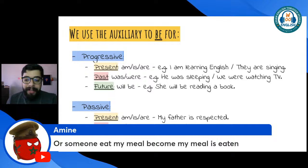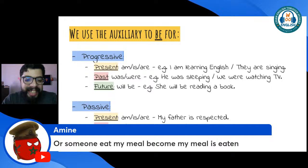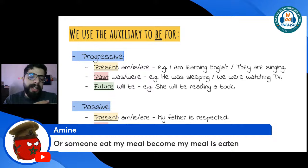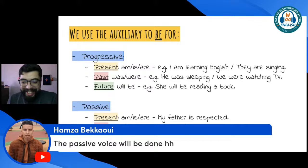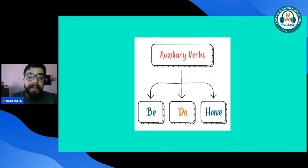For anyone who just joined: today we are talking about auxiliary verbs — helping verbs that help the main verb. There are three main auxiliary verbs: be, do, and have. For auxiliary be, there are two main uses: progressive/continuous (e.g., 'I am working') and passive voice (focusing on the action rather than the subject).